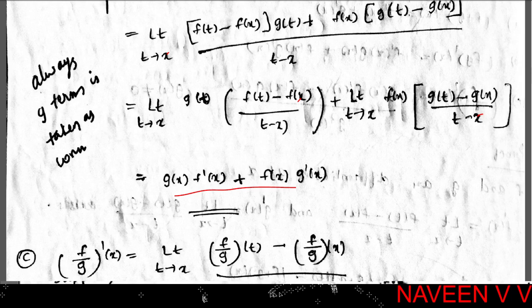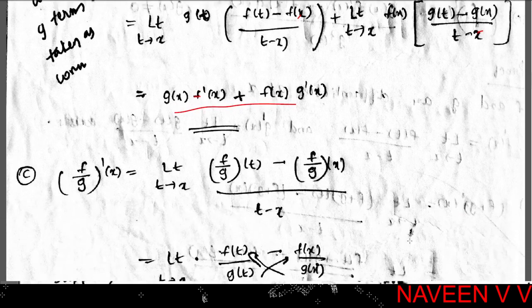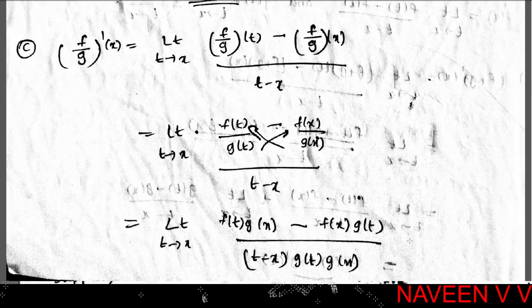So f·g is differentiable at point x and the derivative (fg)'(x) = g(x)·f'(x) + f(x)·g'(x). Now for the third part, we prove the quotient rule assuming g(x) ≠ 0.